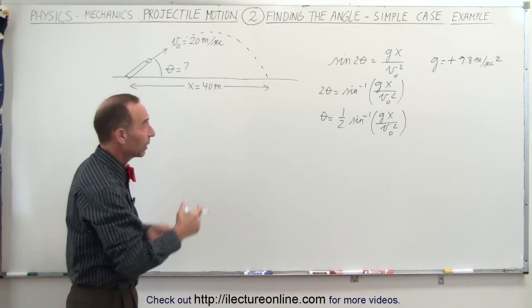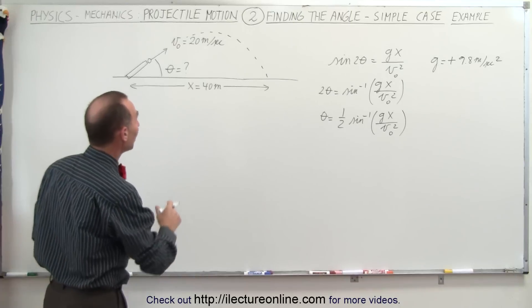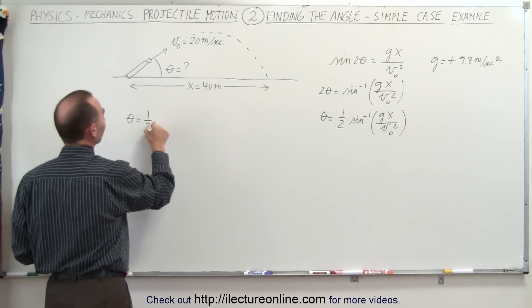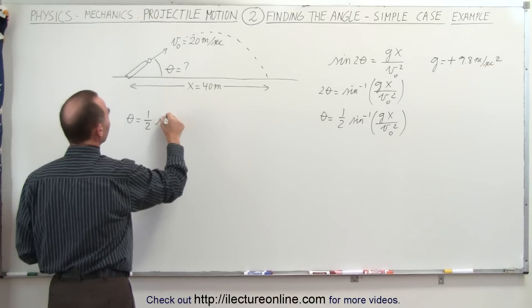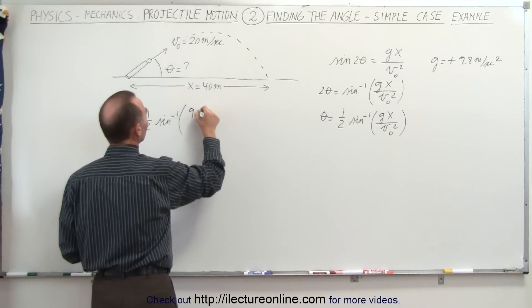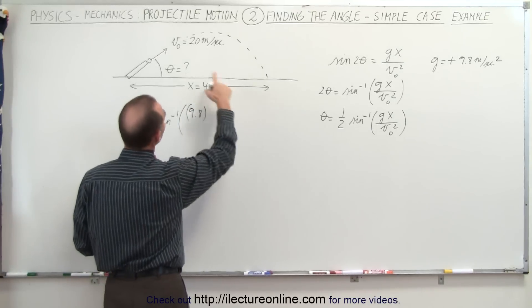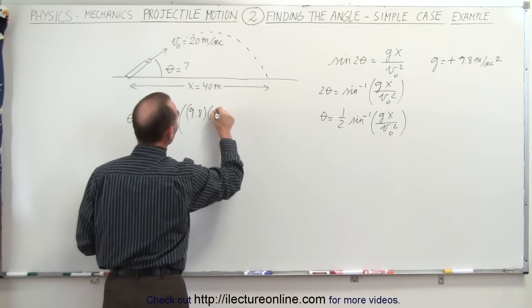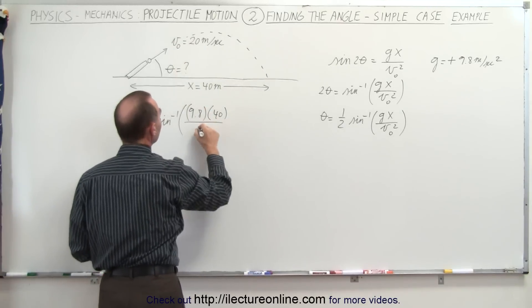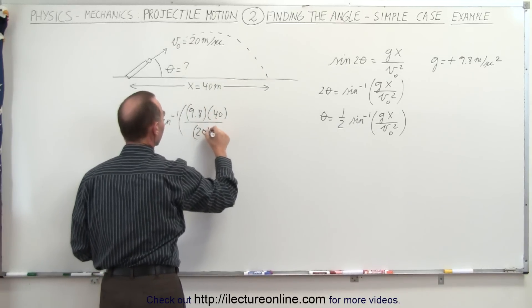Now we have the equation, let's plug in what we have and see how we find the answer. So the angle theta is equal to 1 half times the arcsine and in our case, G of course is still 9.8. X is going to be the range, which is 40 meters, divided by V initial, 20, and of course we have to square that.